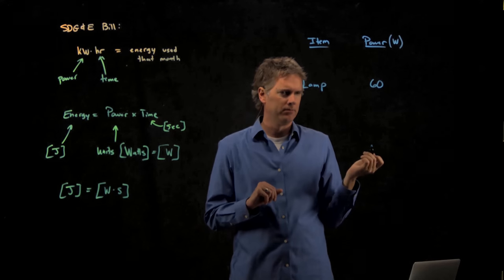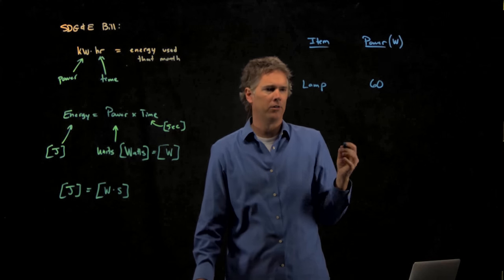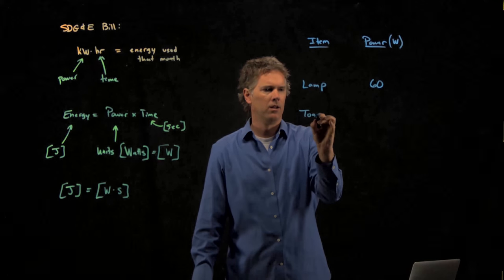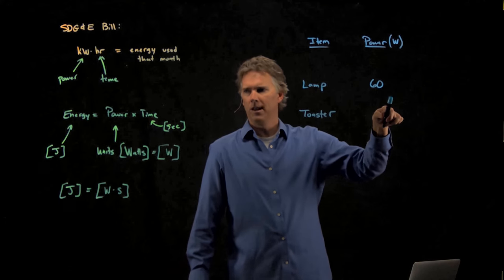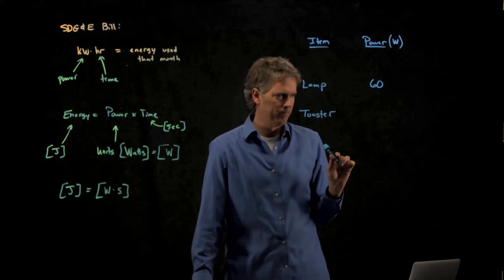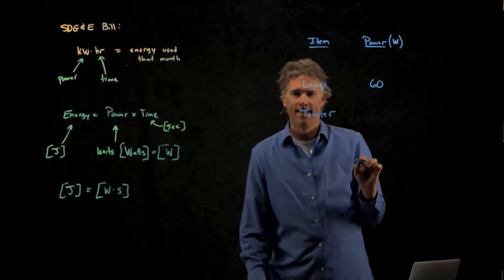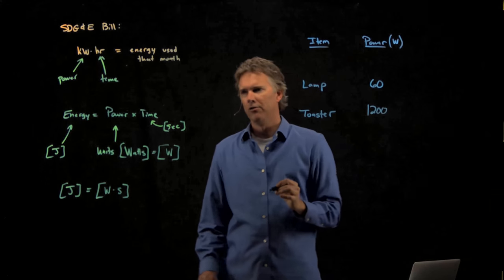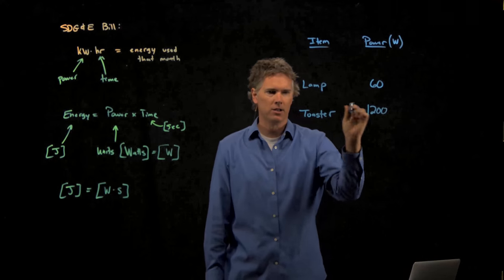Okay, what else? Toaster. Okay, we'll put a toaster down here. How much does a toaster use? Is it less than a light bulb or more than a light bulb? More. How much more? Okay. Almost. It's probably closer to like 1,200. Okay. Toaster actually uses a lot.